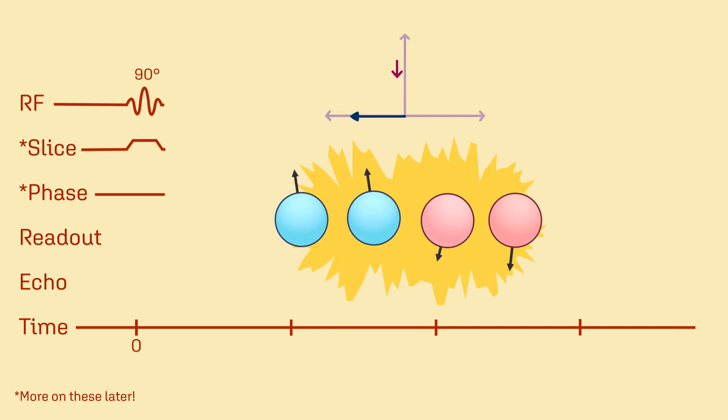A 90-degree RF pulse is applied, eliminating longitudinal magnetization and producing a transverse magnetization vector as protons precess in phase.